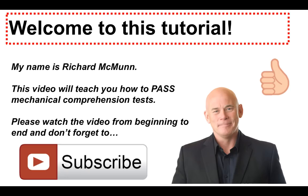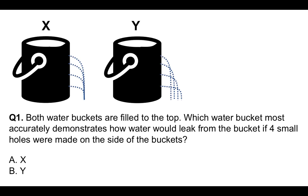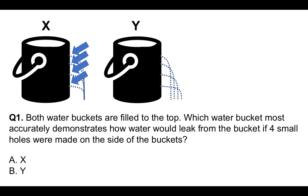Let's get straight into it. Question number one. We have two buckets here, X and Y. Both water buckets are filled to the top. Which water bucket most accurately demonstrates how water would leak from the bucket if four small holes were made on the side of the bucket? Is it A — X, or B — Y? You can see these four small holes made in the bucket and the water coming out on X and Y. We have to decide which one accurately demonstrates how water would leak from the bucket.